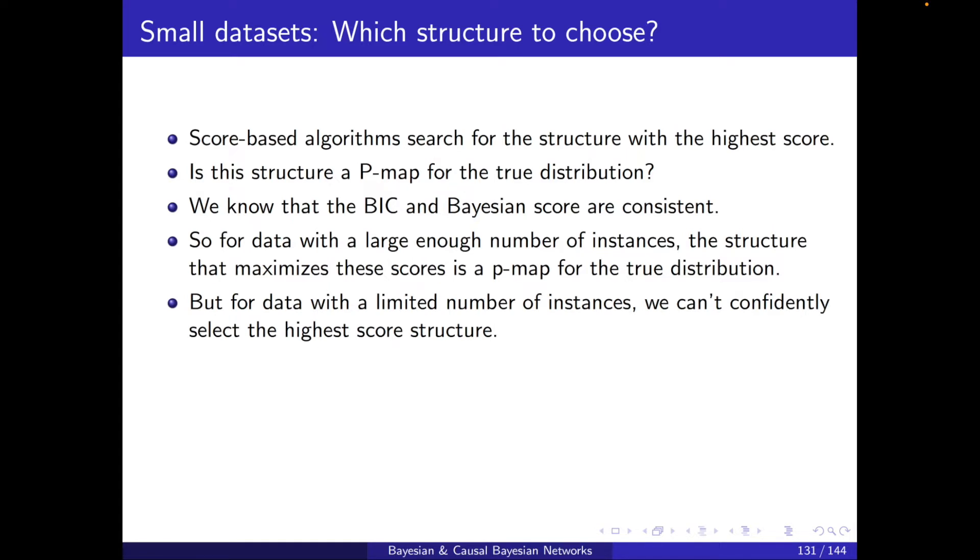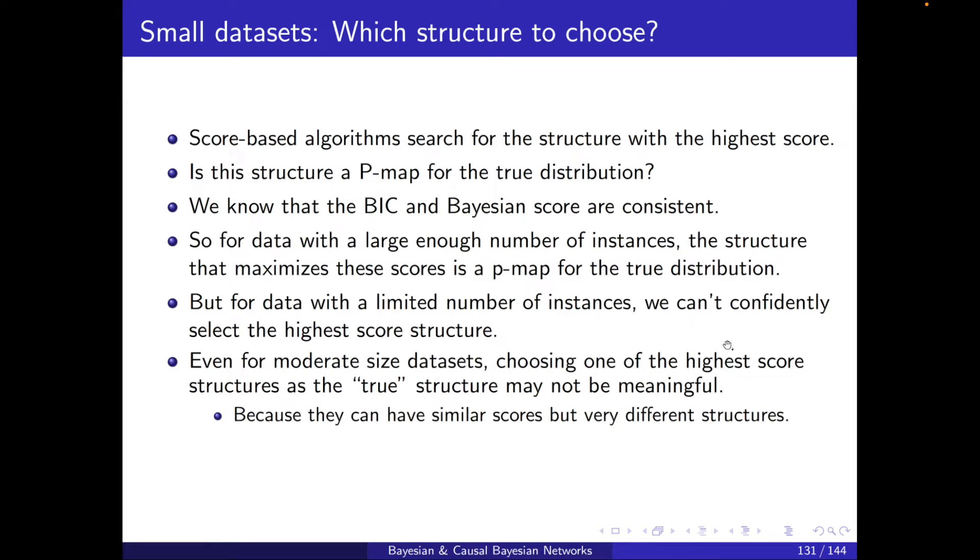But for data with a limited number of instances, we can't confidently select the high score structure, even for moderate-sized datasets. Choosing one of the high score structures as the true structure may not be meaningful, because these high score structures can have similar scores but very different structures. So what is the solution?